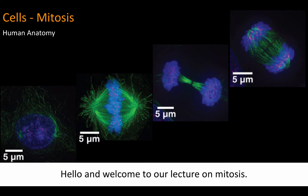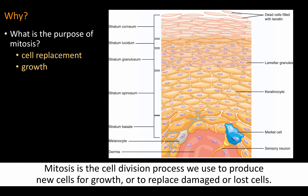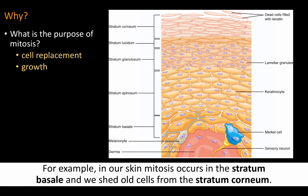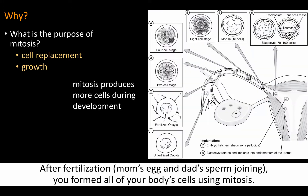Hello and welcome to our lecture on mitosis. Mitosis is a cell division process we use to produce new cells for growth or to replace damaged or lost cells. For example, in our skin mitosis occurs in the stratum basale and we shed old cells from the stratum corneum. After fertilization, mom's egg and dad's sperm joining, you formed all of your body's cells using mitosis.